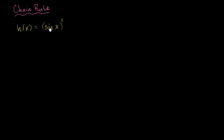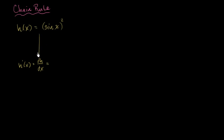So I have h of x, and what I'm curious about is: what is h prime of x? I want to know h prime of x, which another way of writing it is the derivative of h with respect to x — these are just different notations. And to do this, I'm going to use the chain rule.